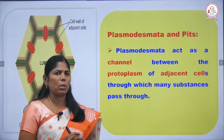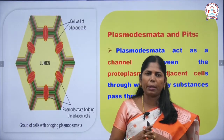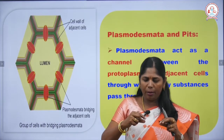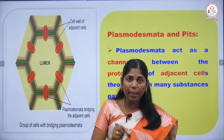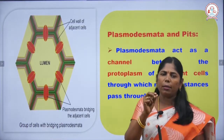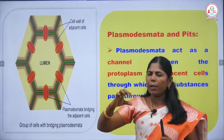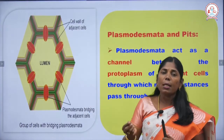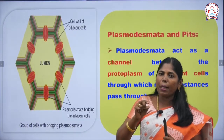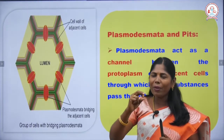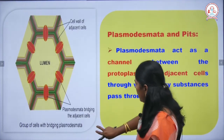Plasmodesmata, or pits, are present on the cell wall. The secondary wall has uneven thickening, so in regions where thickening is absent, the area is very thin and minute pores are present — these are known as plasmodesmata. Due to the uneven thickening of the secondary wall, pores are formed; in those regions the primary wall and middle lamella remain as a continuous layer.